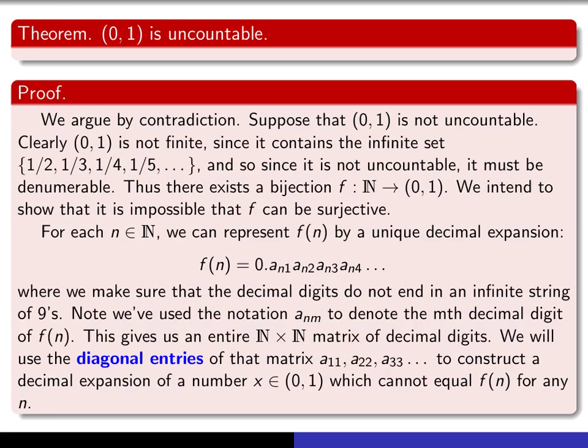Okay, so here's the proof. We're going to argue by contradiction. We're going to assume that (0,1) is not uncountable. And so that means either it's finite or it's denumerable. But obviously it's not finite because it contains at least this particular infinite set here. So that means it must be denumerable. And therefore, there must exist a bijection from the natural numbers into (0,1).